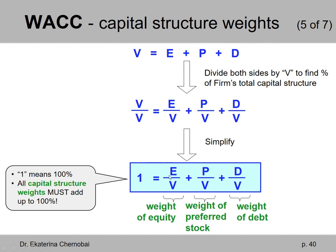So the weight of equity is E over V, the weight of preferred stock is P over V, and the weight of debt is D over V — three weights in the firm's capital structure. Now let's look at a couple of examples.